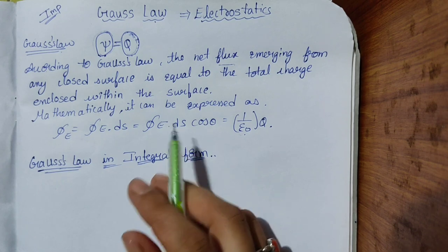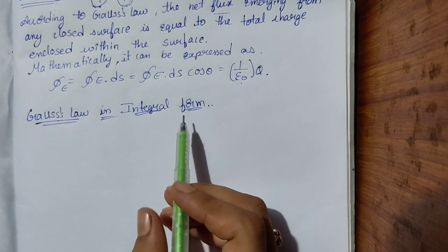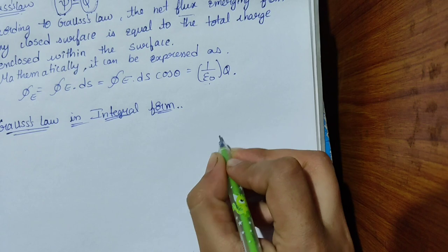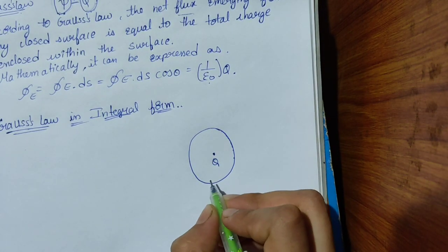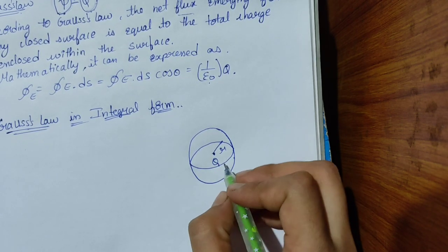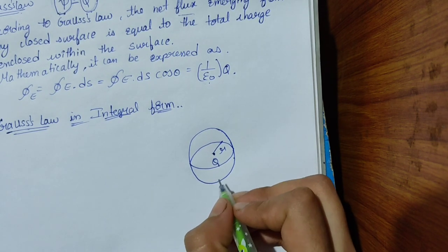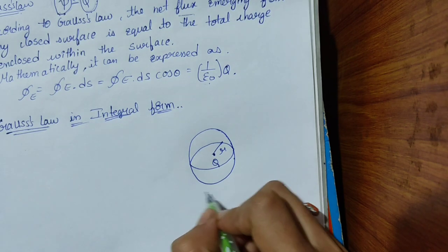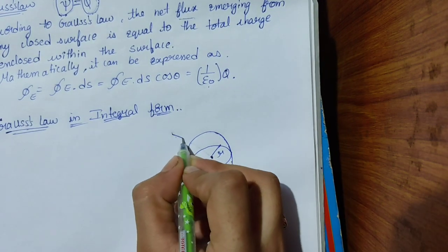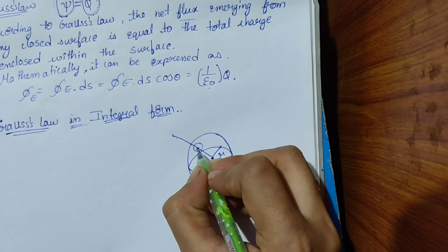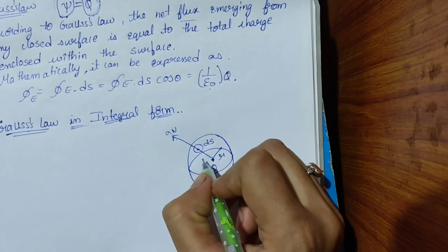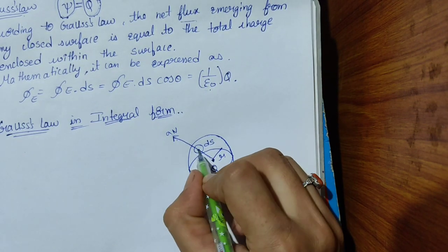This was about Gauss's Law. Now the next topic is Gauss's Law in integral form. Consider a charge Q enclosed at the center of a sphere with radius r. This charge Q causes Q coulombs of flux, hence electric flux density exists on the surface of the sphere. Also consider a differential surface area dS on this sphere.